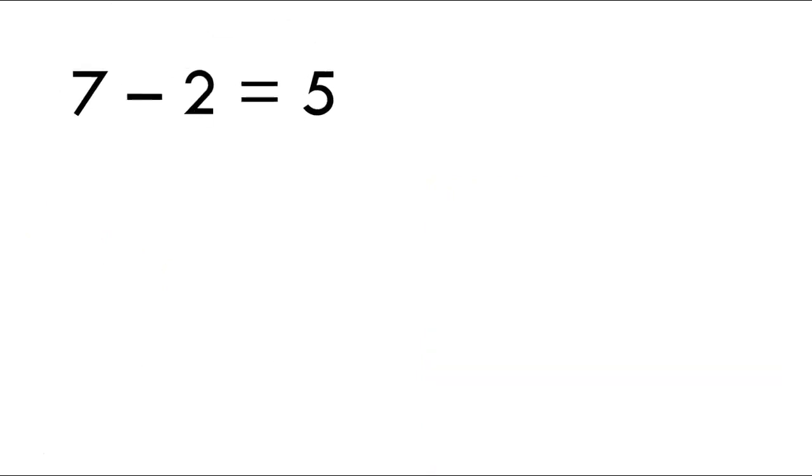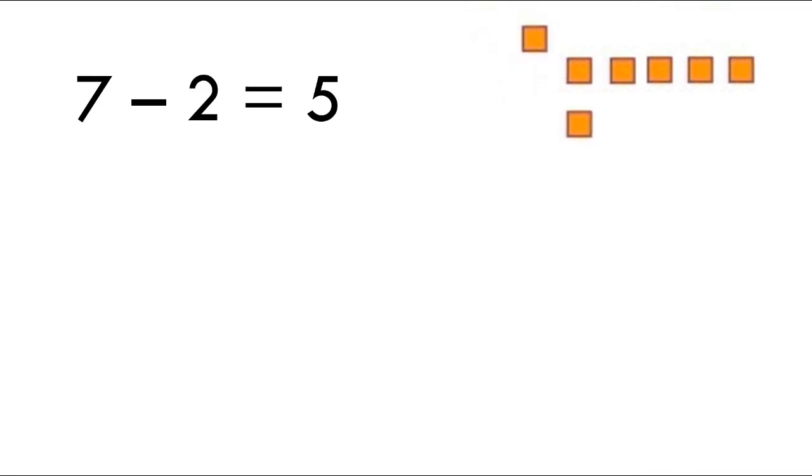We can do the same thing with subtraction. Let's take our 7 minus 2 equals 5. We have our 7 ones, and we need to take 2 of those away. And we have 5 ones left here.